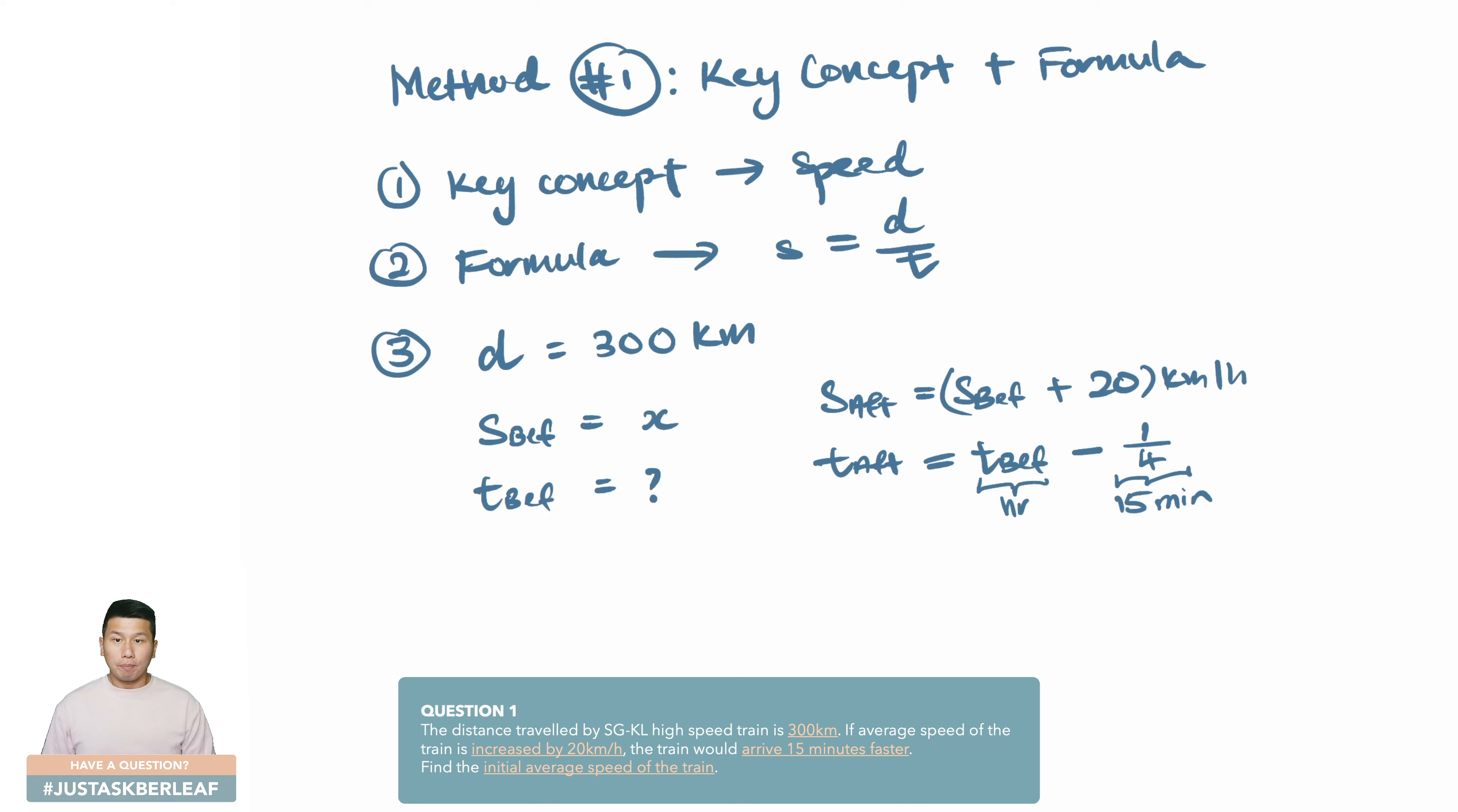Generally, the connecting factor can be any of these components within the formula. It can be the distance, the speed, the time. Since we are looking for the initial speed of the train, which is this over here, we then can erase this and denote it with x. With that, we would have to use any of the other components as the connecting factor. I would choose to go with the time after.